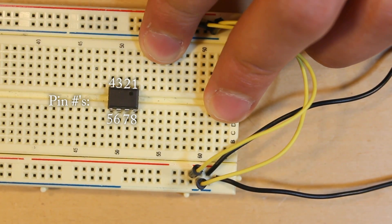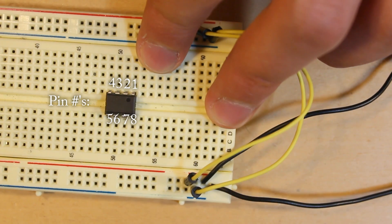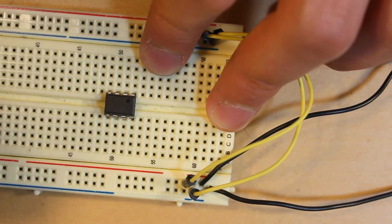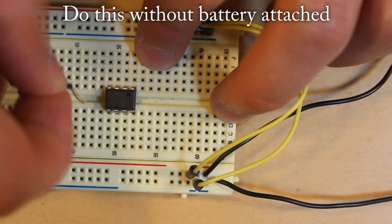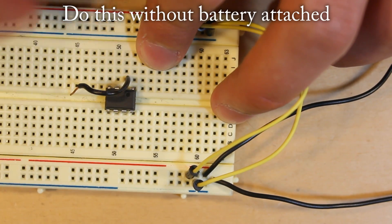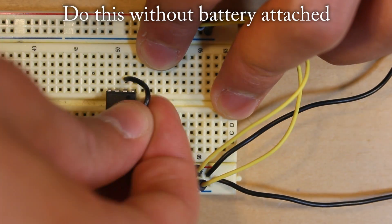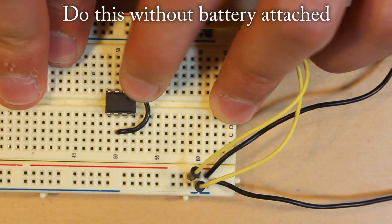This little dot just indicates that this is pin 1. Next, we're going to take another jumper, connect it to pin 2, and then connect the other side to pin 6.